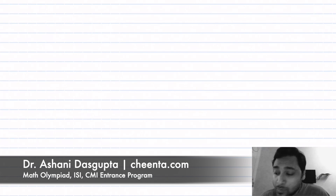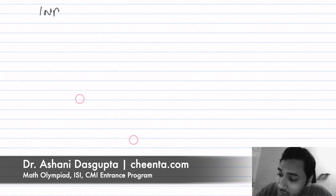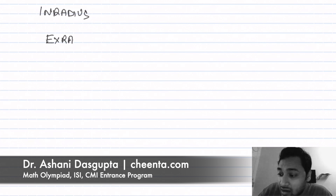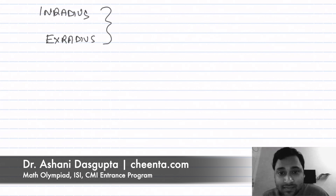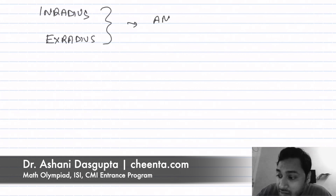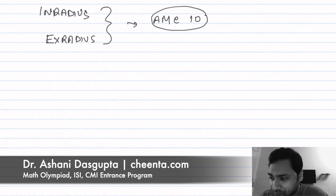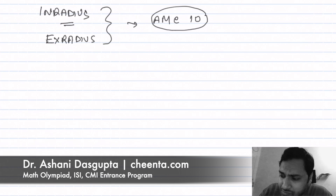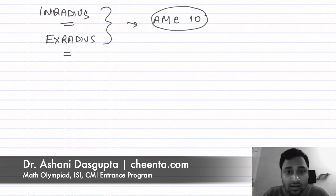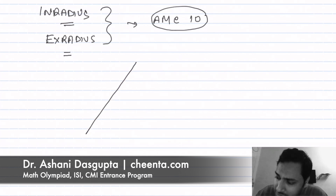Hello everyone, today we will be learning about inradius and exradius, and how to apply these two ideas to solve problems. This particular problem will be from the AMC 10 — the American Mathematics Competitions, the first level of Math Olympiad in the United States. We'll cover what inradius and exradius are and how to compute their values given the side lengths of a triangle. Let's start with triangle ABC.